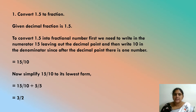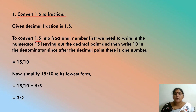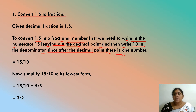We will see one example. Convert 1.5 to a fraction. To convert 1.5 into a fractional number, first we write the numerator as 15, leaving out the decimal point, and then write 10 in the denominator. Since after the decimal point there is only one digit, we get 15/10. We simplify by dividing by 5.